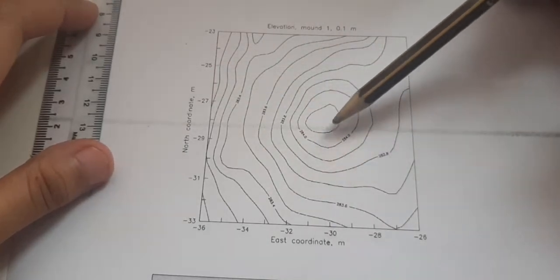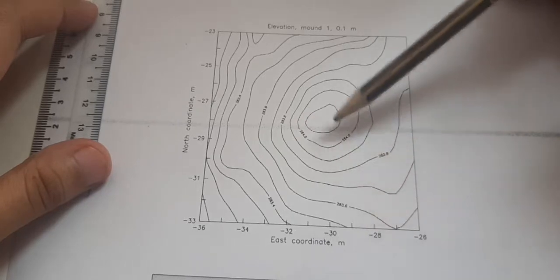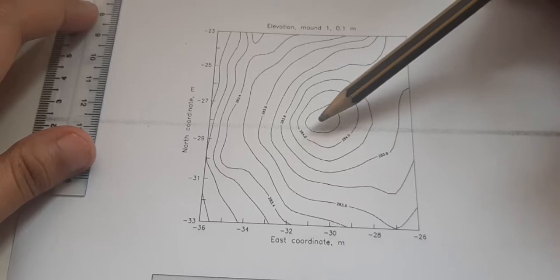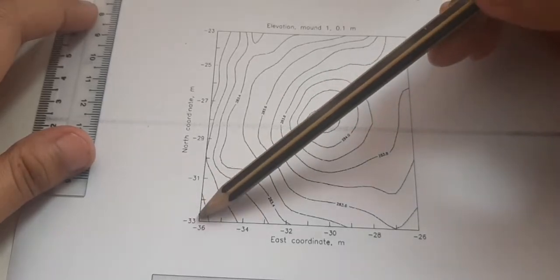So contour map is a map that shows the mountain elevation, the height of mountain from the top or the peak to the base.